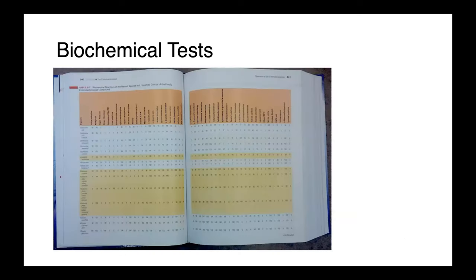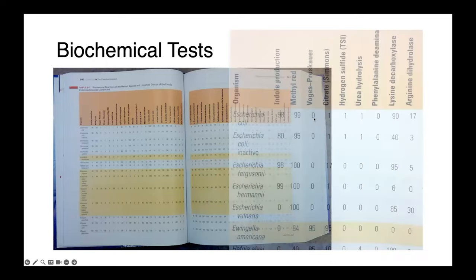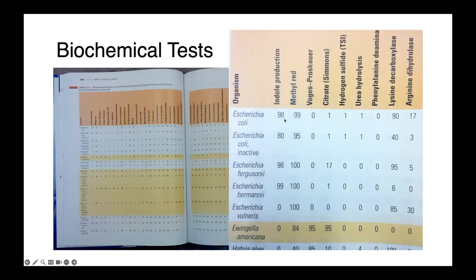Once we've done all our biochemical tests, we have to interpret them. To do this, we commonly use biochemical identification tables found in any good diagnostic microbiology textbook. There are lists of tests along the top, all of our different species along the y-axis, and then the percentage of isolates of each species that are supposed to be positive for each test listed within the table.